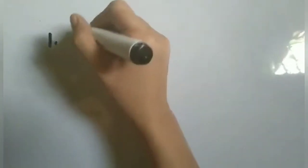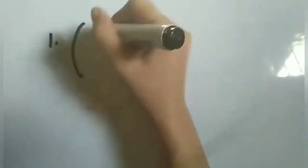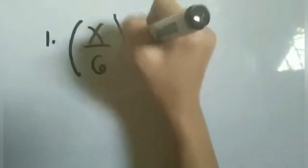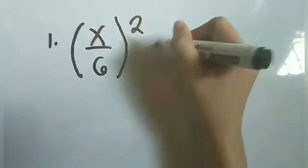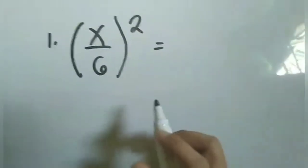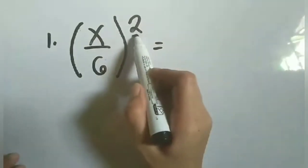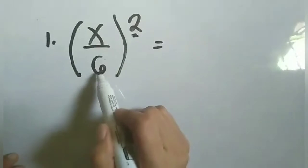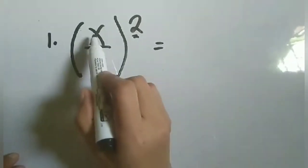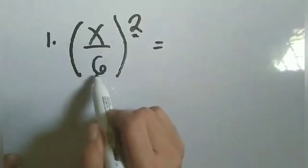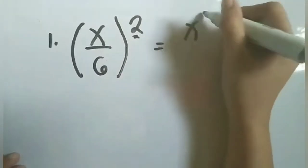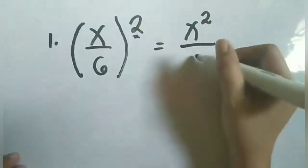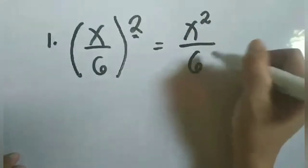Let's have number 1: the quantity x over 6, raised to 2. I-distribute lang natin yung exponent sa numerator at sa denominator, so magiging exponent siya ng numerator at denominator.